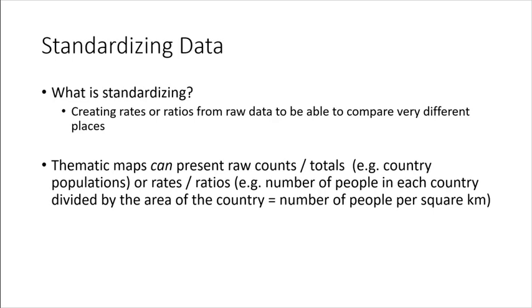So when we're standardizing, we're talking about like population density, counts of something per 100,000 people, something like that. Like imagine comparing Canada population to Switzerland's population. Canada has more people, but it's way bigger. So it has a much lower population density. And you would lose that if you just showed the population in a choropleth map.